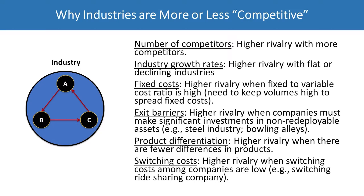You will have higher rivalry with a flat or declining industry than a growth industry. If there are higher fixed costs relative to variable costs, that will lead to higher rivalry because companies need to spread those high fixed costs across many units, so they fight to keep volumes high even at the expense of competitors. If there are exit barriers due to significant non-redeployable assets — such as in the steel industry where you have a lot of money invested in a foundry that you can't recoup — you will fight instead of exiting. There's also higher rivalry when there are fewer differences in products; product differentiation lets you compete on differences, but without it you tend to get into price wars.